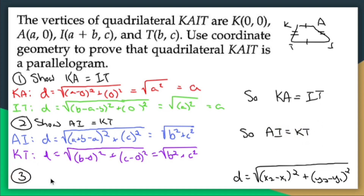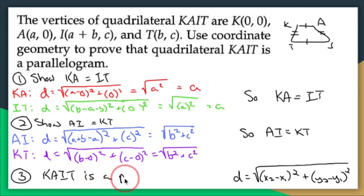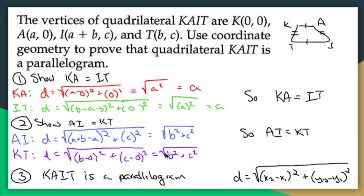We've shown that AI equals KT. Which means KAIT is a parallelogram — since two pairs of opposite sides are congruent, it's going to be parallel. There's a theorem name for that which is escaping me right now since I'm recording this at 10:15 p.m.